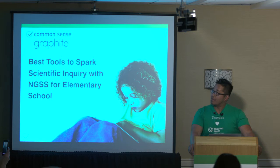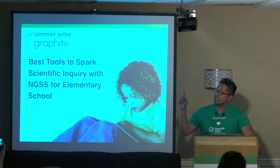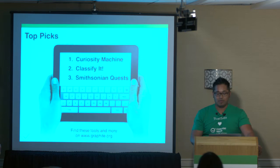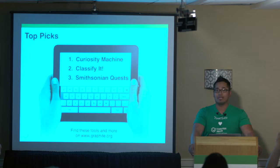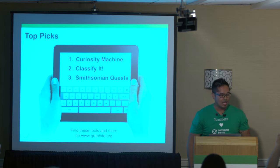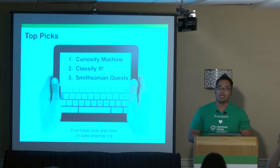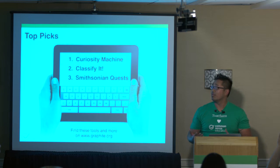I also want to note that I am Graphite certified, and as you can see here, the products we are going to be referencing are Graphite-rated. The products we are talking about today are going to be Curiosity Machine, Classify It, and Smithsonian Quest. We did not receive any kind of support or funding from any of these developers to talk about their tools. We found them on our Graphite platform to just be rated best for learning in the classroom, and that's what we brought here to share with you.